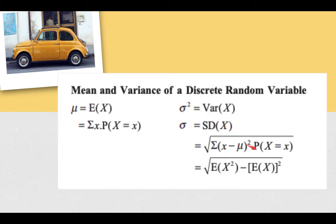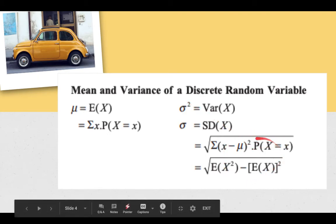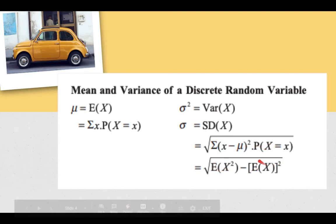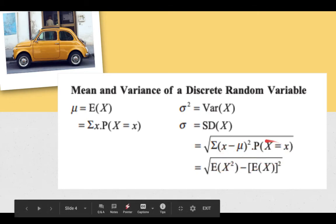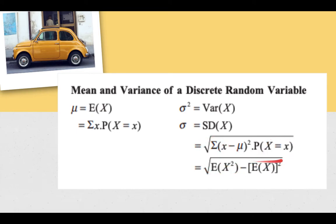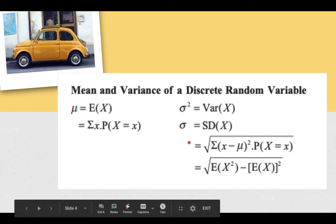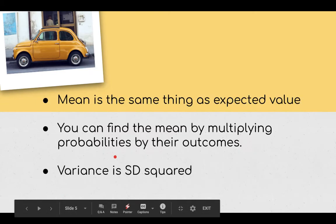The standard deviation squared is the variance, or if you've got the variance you could square root it to get the standard deviation. Then there's this formula here which I'm hoping you won't use. You could use it, just use your calculator. It's much easier.